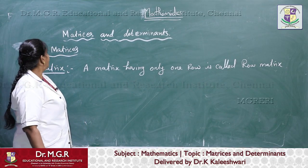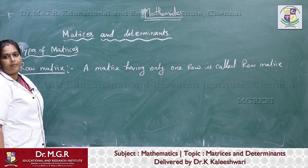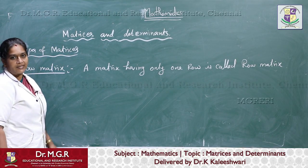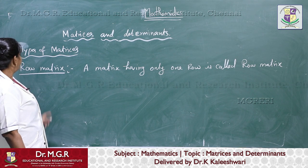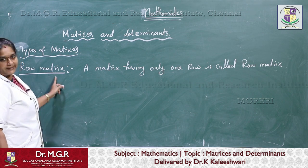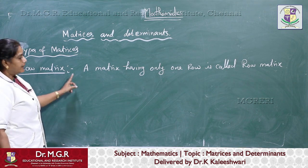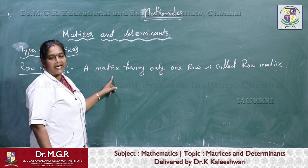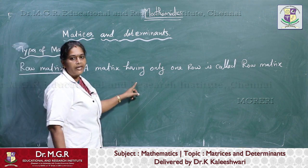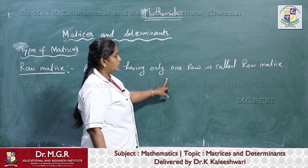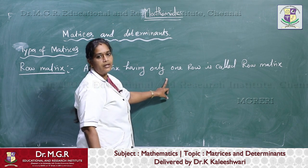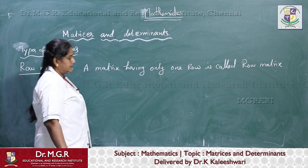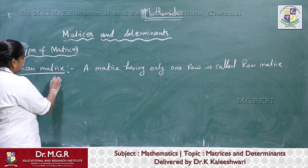Now, let us see the types of matrices. So, the first one is row matrices. A matrix having only one row is called the row matrix. For example,